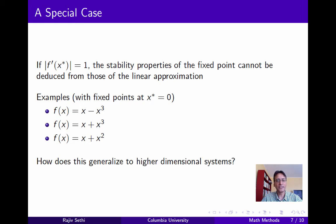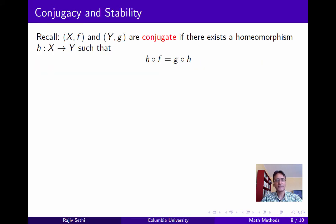Now we need to think about how this might generalize to higher dimensional systems, and we'll do that later in this segment. But first I want to return to the issue of topological conjugacy and its relation to stability. Recall that we defined two systems (x, f) and (y, g) as conjugate if there exists a homeomorphism h from x to y such that the composition of h with f is equal to the composition of g with h. And we also showed in an earlier segment that if there exists such a homeomorphism h, then h composed with the nth iterate of f is equal to the nth iterate of g composed with h.